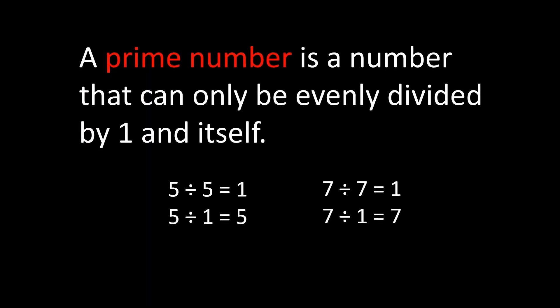A prime number is a number that can only be evenly divided by 1 and itself. For example, 5. You can divide 5 by 5 and get 1, and you can divide 5 by 1 and get 5. There's nothing else you can divide 5 by and get a whole number quotient. Same with 7. You can divide 7 by 7 or 7 by 1, but there's nothing else you can divide 7 by and get a whole number answer. So 5 and 7 are examples of prime numbers.